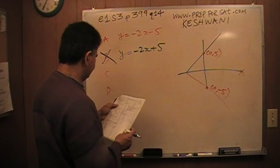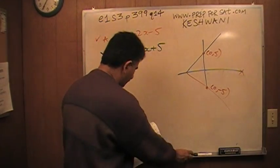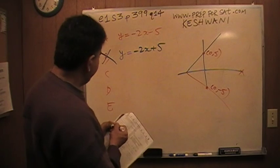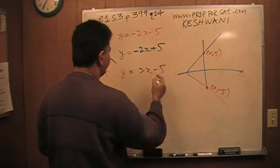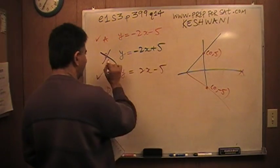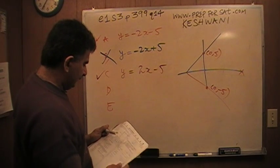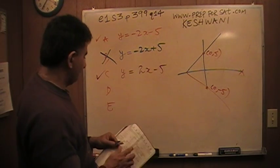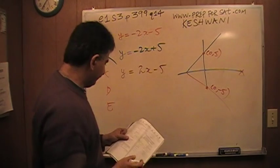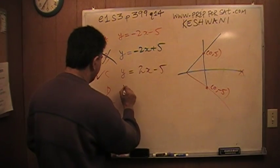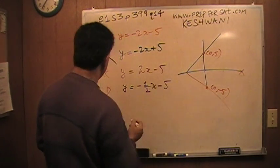C says y equals 2x minus 5. See, when x is 0, y is negative 5. So that one works.